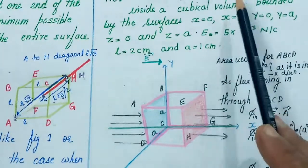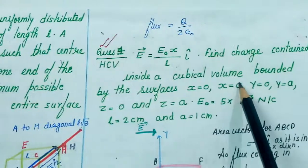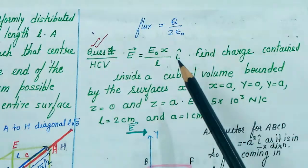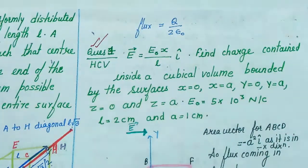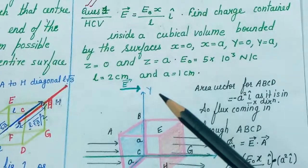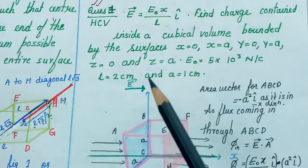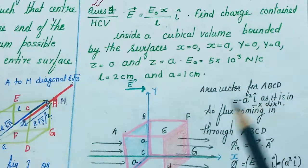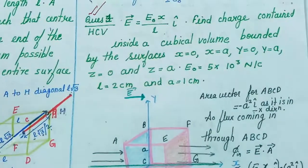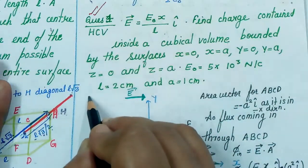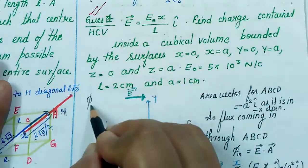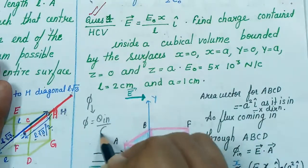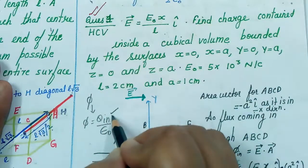Now you might wonder why we are calculating flux. The question asked for charge contained inside the cubical volume, and we are given the electric field and surface size. If we calculate net flux and use Gauss's Law — flux = Q_enclosed / ε₀ — then we can find Q_enclosed. So our steps are: first calculate flux associated with the cube, then use Gauss's Law to find the enclosed charge.